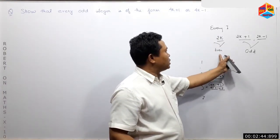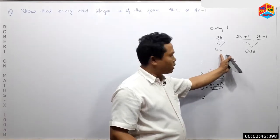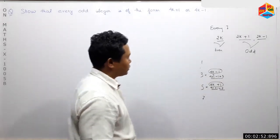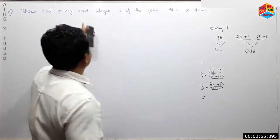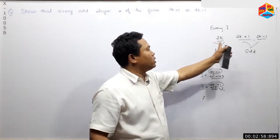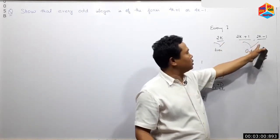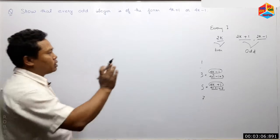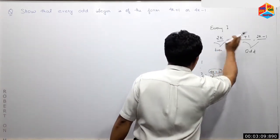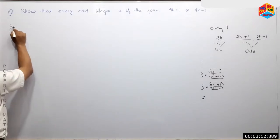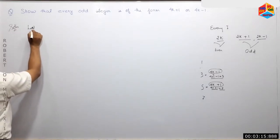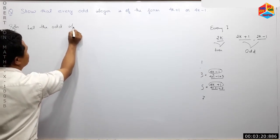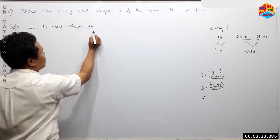So every integer — 6k minus 1 is equal to 2k minus 1. If this integer grows more than 1, if this integer grows higher, 6k minus 1 is equal to 2k minus 1. Every odd integer — let the odd integer be a.